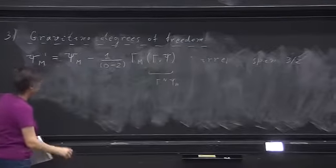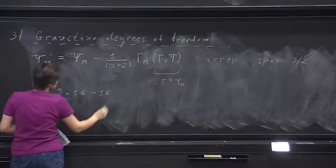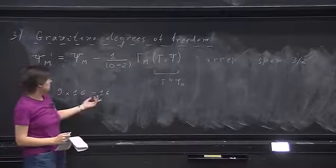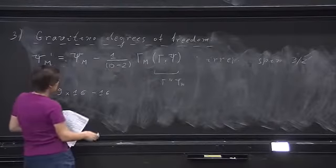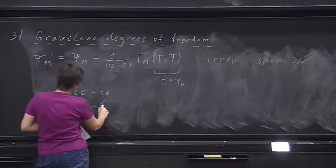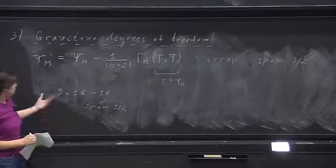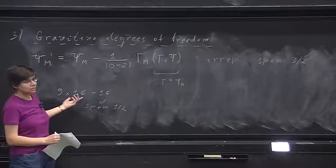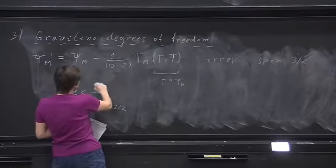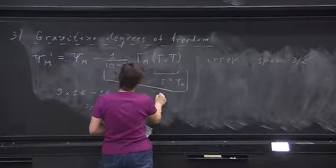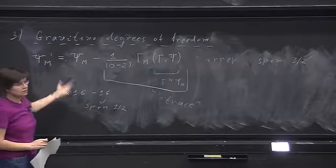When we counted the degrees of freedom, we had 9 times 16 and wanted to subtract 16 more, which corresponded to a spin 1/2. Without subtracting this term, we would have a reducible representation that would also contain that spin-1/2 part. This is like subtracting the trace when handling the metric — we had a symmetric but traceless matrix giving the degrees of freedom for the graviton. Similarly, here the gamma-trace part is the analog of taking a traceless combination.